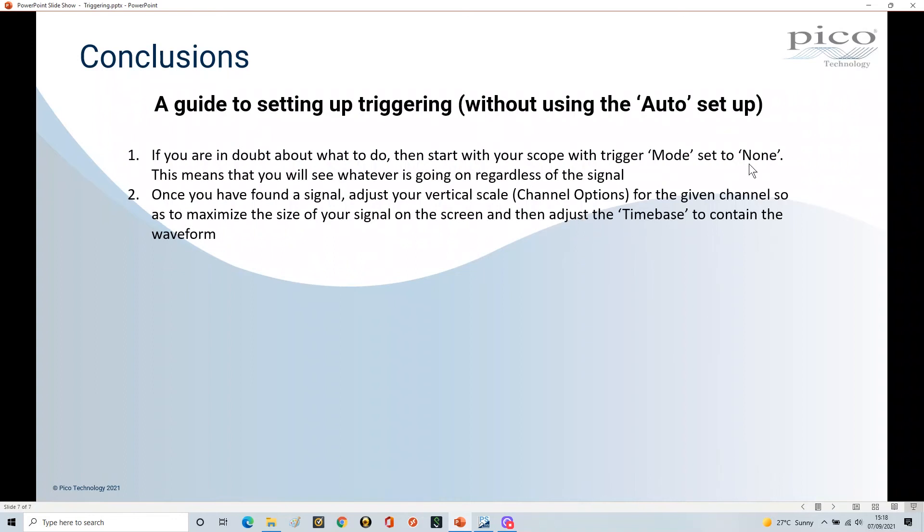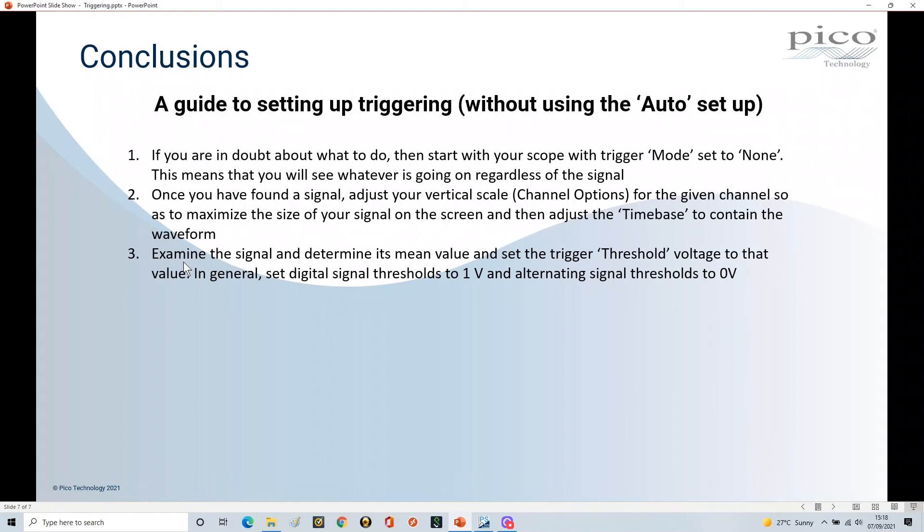So it'll be totally unsynced and it'll be all over the place, quite random, but this is like the starting point. Now once you've done that then what you want to do is maybe examine that signal and determine its mean value and set the trigger threshold voltage to that value.